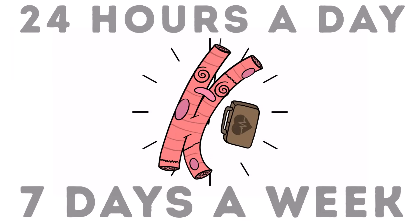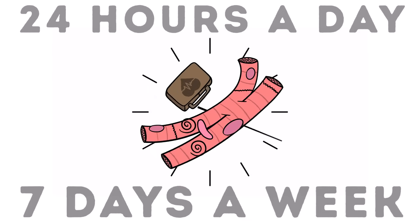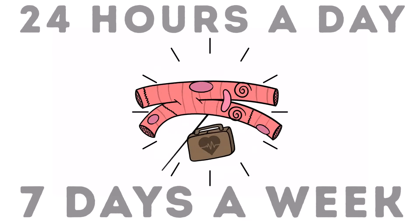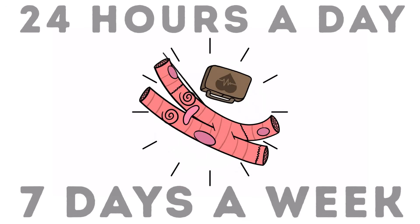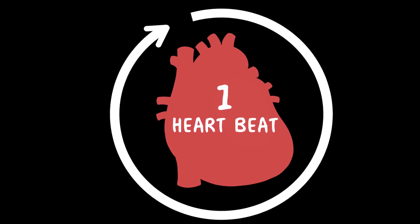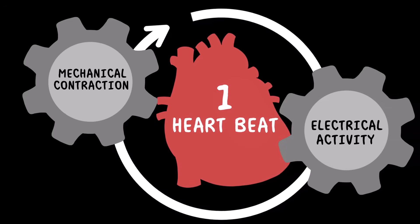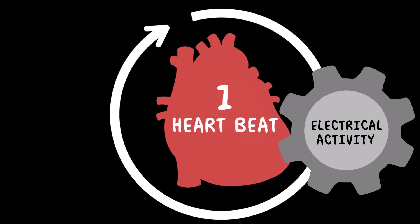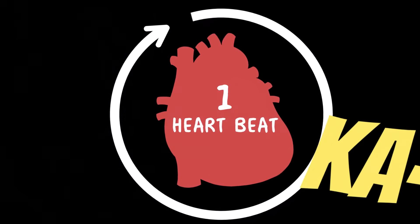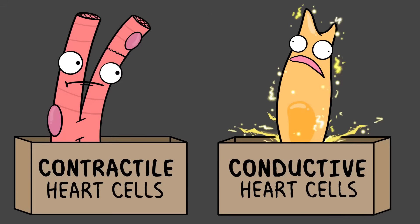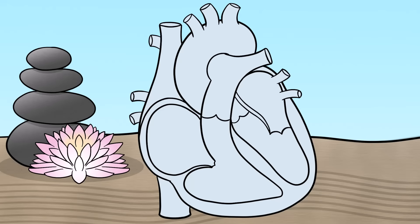Cardiac muscle cells have some serious work to do — on average, a human heart will beat around a hundred thousand times a day. To break this down, we're going to consider a typical cardiac cycle — that's one heartbeat — which can include the mechanical contraction, relaxation, and the electrical activity. But in this video we want to focus on the electrical part, meaning we'll be focusing on conductive cells, not contractile cells of the heart.